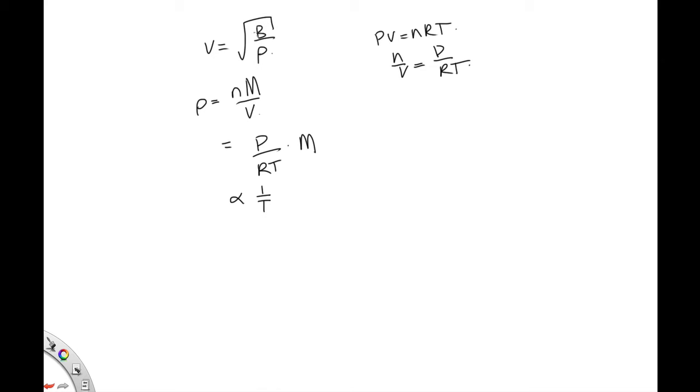The bulk modulus for a given material also does not change. So we have that the velocity is proportional to 1 over the square root of the density, which is proportional to, because the density is proportional to 1 over T, this is proportional to the square root of the temperature. So this means that we can write V1 over V2 is equal to the square root of T1 over T2.